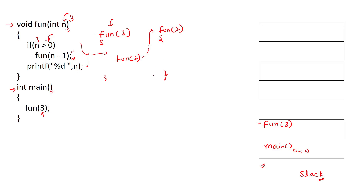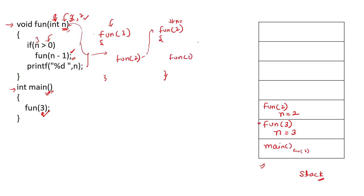Inside the activation record for fun(2), a new n is created with value 2. Since 2 is greater than 0, fun(n-1) = fun(1) is called. Similarly, a new activation record is created for fun(1) with a new n equal to 1. Since 1 is greater than 0, fun(0) is called next.